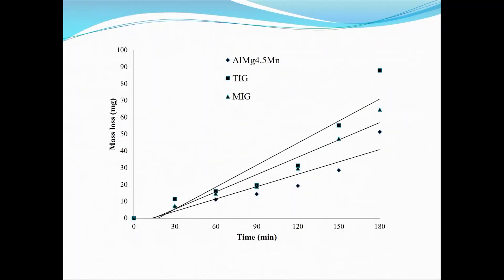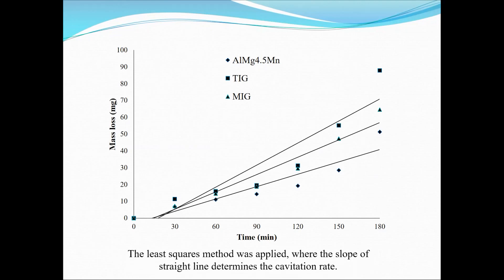Here are the results for mass loss given in micrograms. You can see at once that naturally the base metal performs best, then MIG is better than TIG — which might be somewhat surprising — but that is due to the less porosity obtained by MIG, as you could see in the previous slide.